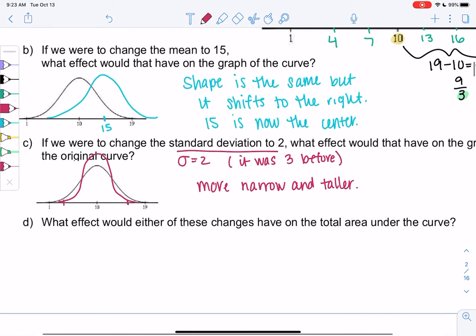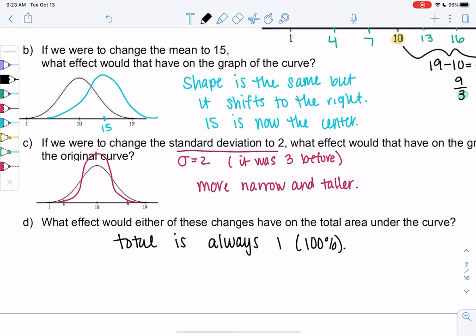And then last question is, what effect would either of these changes have on the total area under the curve? So we said total area is always 1 or 100%. So even though the shape changed a little, it's still 1. So no change on area. It's always 1.